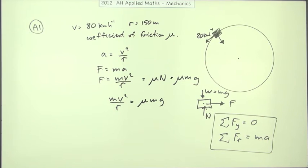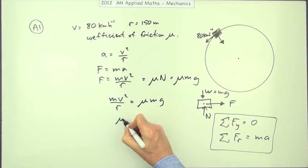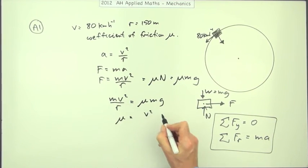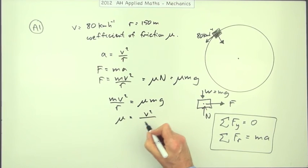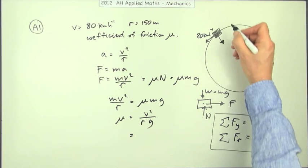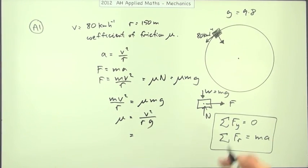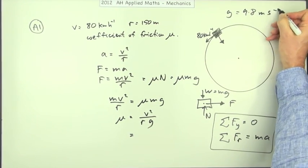Anyway, after this, now it's just a case of rearranging that for μ. And notice of course, the mass is irrelevant. That's going to cancel out. So the coefficient of friction will simply be v squared over rg. Now put in the numbers, be careful to match the units. We're going to be using g here, equal to 9.8 meters per second squared.